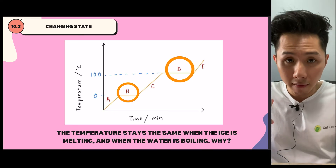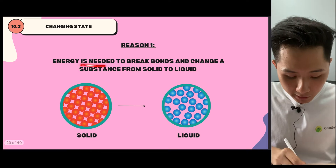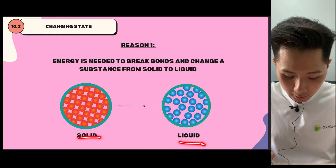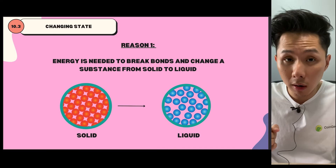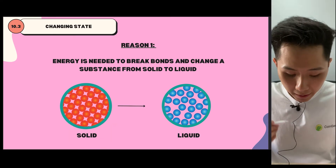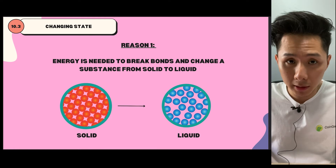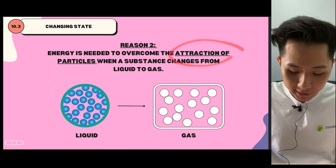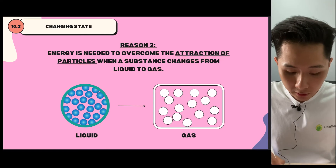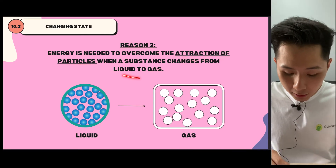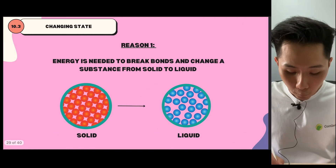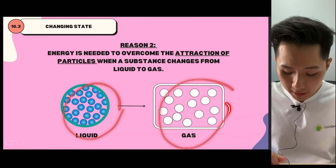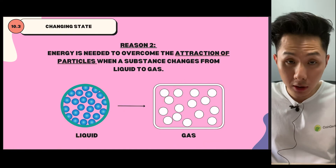The question we want to ask is: why is it that in parts B and D of the graph, the temperature stays the same even though time has passed? There are two main reasons. First, energy is needed to break bonds and change a substance — for instance, from solid to liquid. Solid is held together by very strong attractive forces, and in order to break these forces, energy is supplied. That energy will not be used to increase the temperature of the substance. Second, energy is needed to overcome the attraction between particles when liquid is changed to gas.